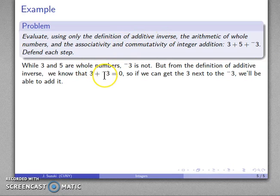So the definition of additive inverse does tell us something useful and from the definition of additive inverse we know that 3 plus the additive inverse of 3 is 0. So if I can get a 3 next to the additive inverse of 3 I'll be able to add it together and in fact what I'll be able to do is I'll be able to add them and get 0.